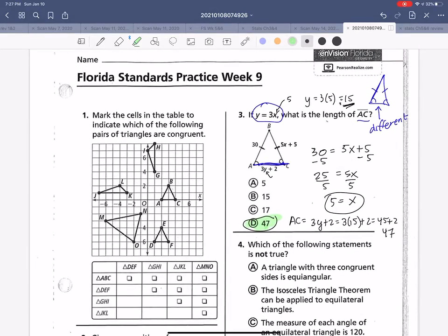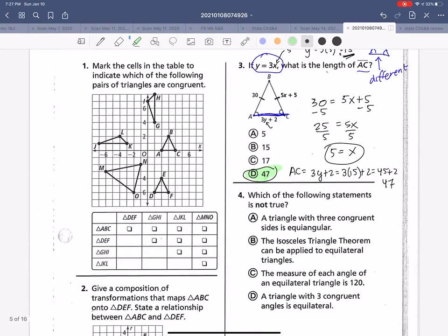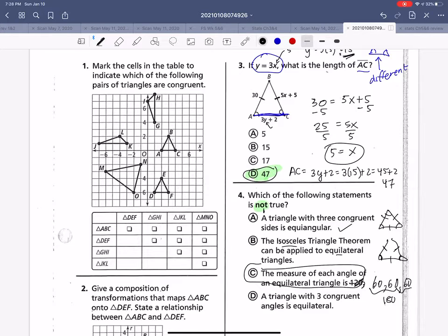Which of the following statements is not true? So that means some are true and one of them is false. A triangle with three congruent sides would be three congruent angles. Yes. An isosceles triangle theorem can be applied to equilateral triangles. Yeah, I could imply that even though if I have all the sides, I can imply that two equal sides make two equal angles. The measure of each angle of an equilateral triangle is 60, right? 60, 60, and 60, add them all up, you get 180. So here's our answer. This one is the one that is not true.